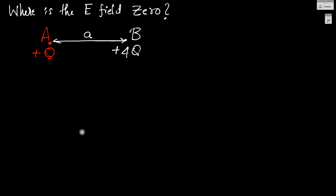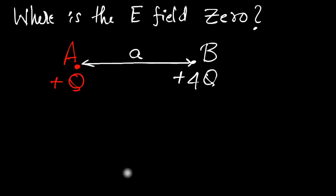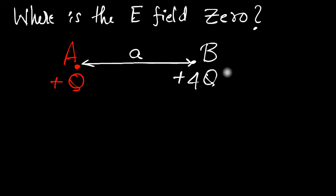Welcome back. In today's episode, we have a problem. The problem is we have two charges, charge A and charge B. One is plus Q and the other one is plus 4Q. We need to calculate a point where the electric field is zero — a point in space where the electric field is zero.